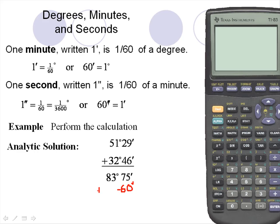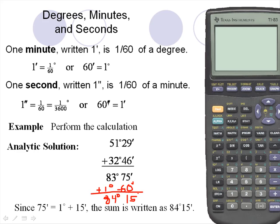So from 75 minutes, I'll subtract 60 minutes and add one degree. Therefore, 83 degrees 75 minutes breaks down into 84 degrees 15 minutes. Since 75 minutes is written as 1 degree 15 minutes, the sum is 84 degrees and 15 minutes.